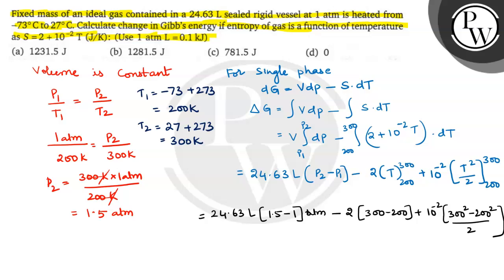24.63 liters into P2 is how much? P2 is 1.5. P1 is 1. This is atmospheres. 2 into 300 minus 200 plus 10 power minus 2 into 300 square minus 200 square by 2. This is the value. Now this on simplification we are getting 24.63 into 0.5 liter atmospheres. And 1 atmospheres litre is equal to 0.1 kilojoules. If you want to convert, you can convert into 100 joules.